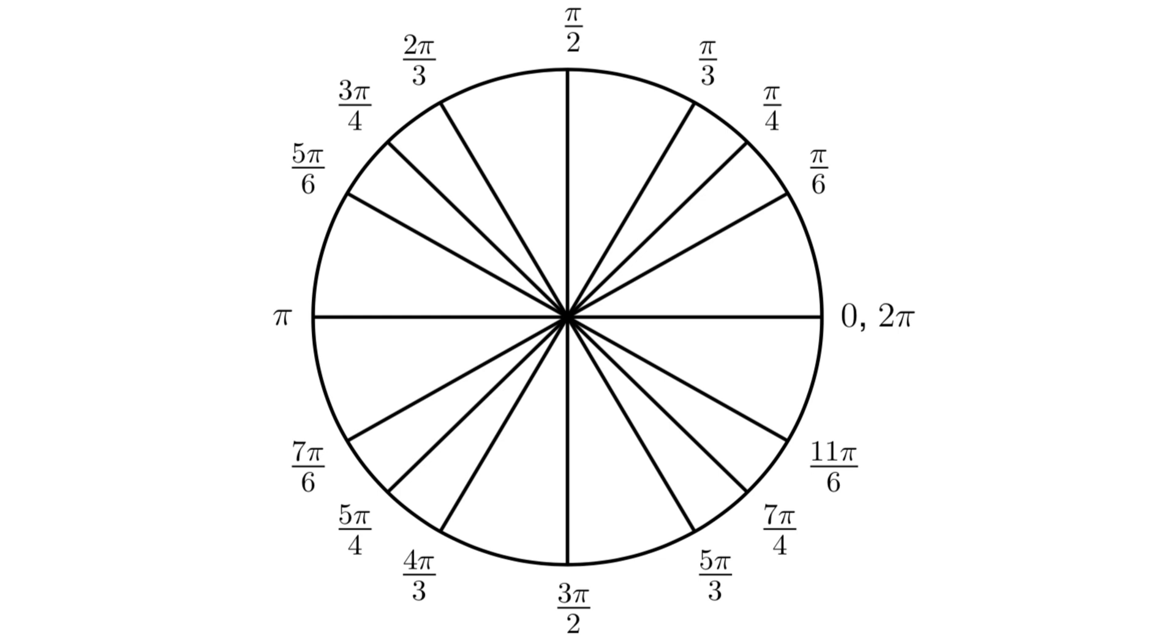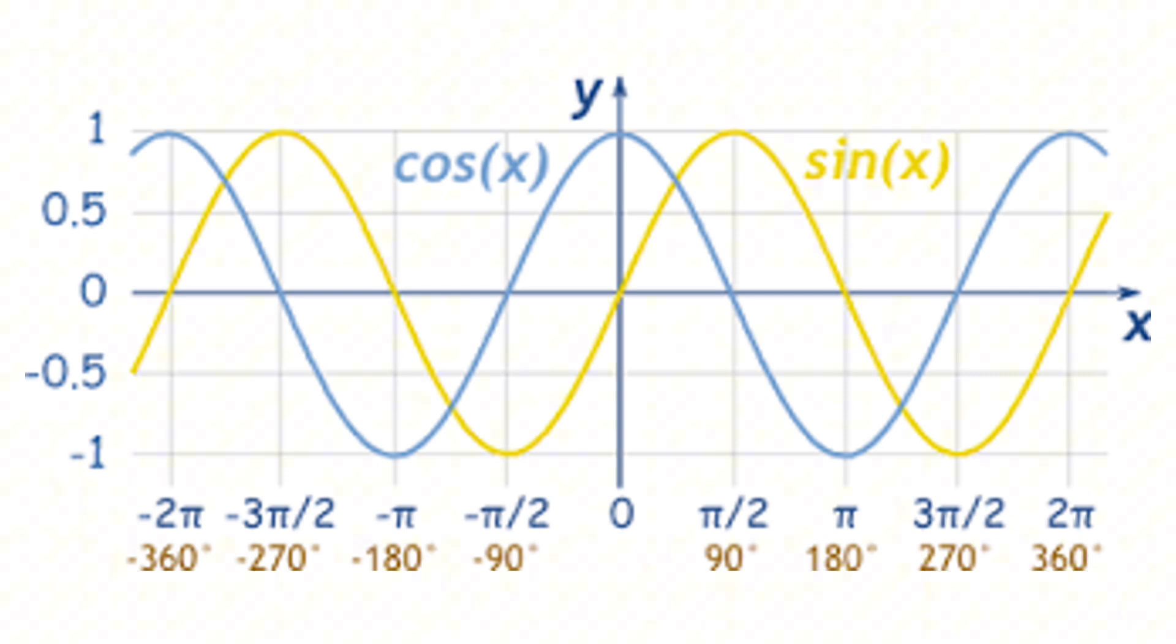On the unit circle, angles are in radians. Sine and cosine values loop between negative one and one. Graphs of sine and cosine are waves.